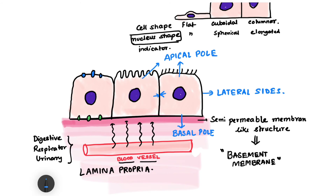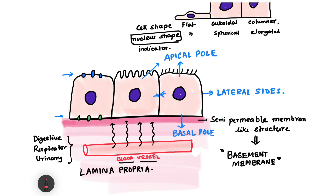Based on the function of the cells, the transporter and membrane proteins at the apical pole and basal pole vary in type and number. The apical pole can have certain modifications — for example, infoldings of the cell membrane giving rise to a brush border epithelium, or mechanical projections known as cilia. Different structures at the apical pole, basal pole, and lateral sides give rise to intercellular junctions.